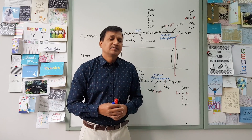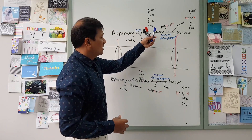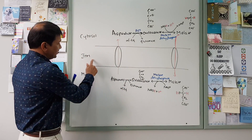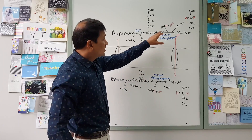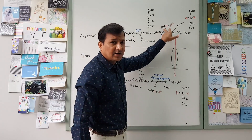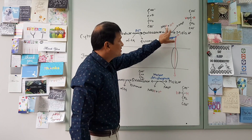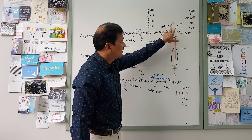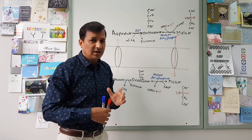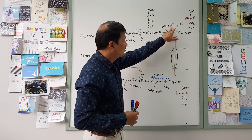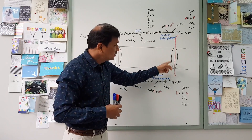Now in the malate-aspartate shuttle mechanism, cytoplasmic NADH+H+ is transported into the mitochondrial matrix. We are concerned about H and H+ — the difference between NADH+H+ and NAD+ is those H and H+. So if we can somehow transport H and H+ into the mitochondrial matrix, they can go into the electron transport chain. It is a kind of smuggling H and H+ into the mitochondrial matrix in an indirect way, because we do not have direct transport of NADH+H+ through the inner mitochondrial membrane.